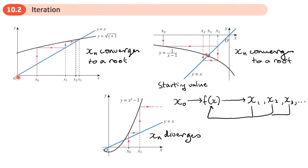You might be asking why the blue line y equals x is there. What happens is you take an x value, that gives you a y value, then that y value you put back into f of x — it now becomes an x value. So the blue line y equals x represents your y value equaling or becoming your x value. The y value's equivalent x value is found on that line y equals x, which then goes into the function giving you a new y value.